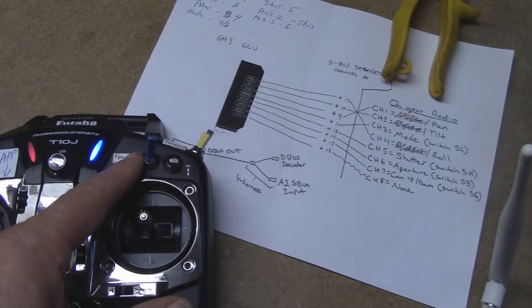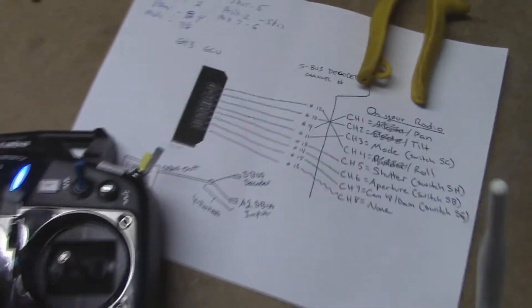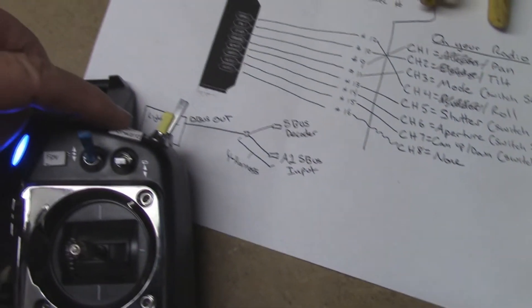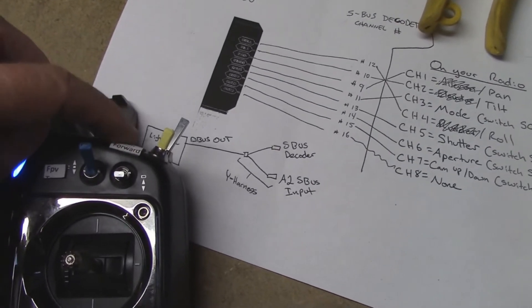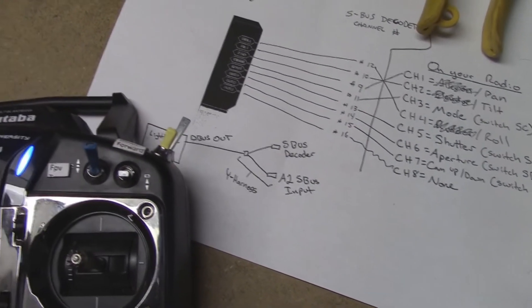And then I have my, on my radio, I have my FPV mapped here. I have my forward or down, whichever way it wants to default when you put it into its FPV position.